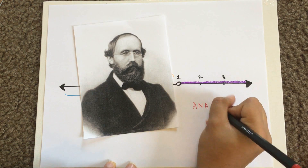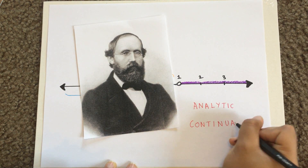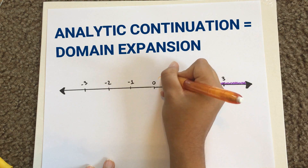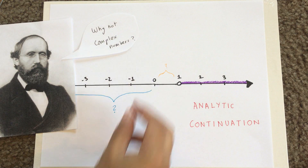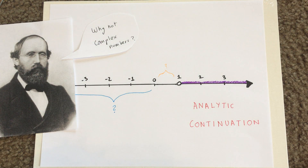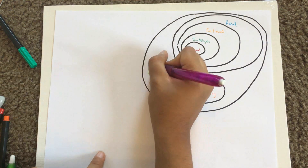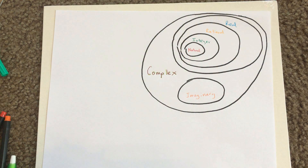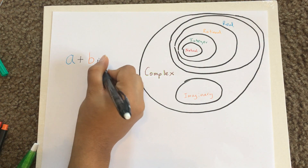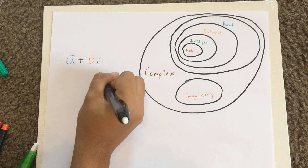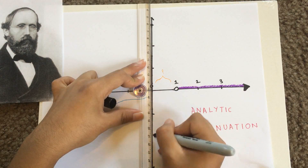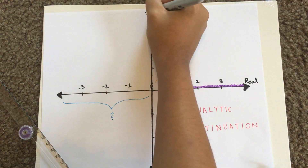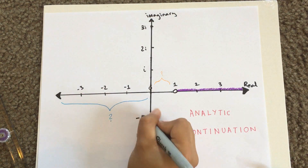And this is where Riemann comes in, as well as a handy thing called analytic continuation — basically another word for expanding our domain so that we can define things like negative 1. Riemann actually went a step further and asked if we could plug in complex numbers. To review, a complex number is just another type of number, usually made up of a real part and an imaginary part, which has the imaginary number i, or the square root of negative 1, in it.